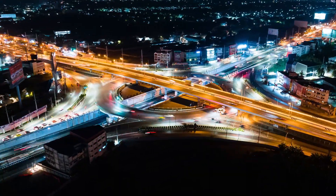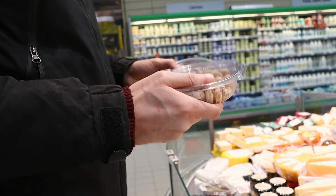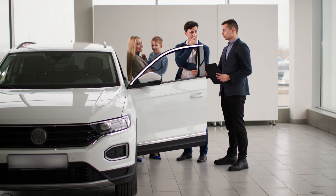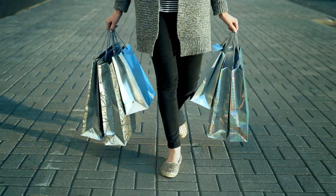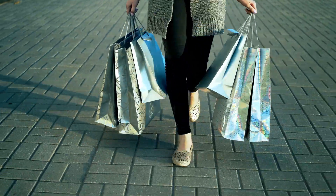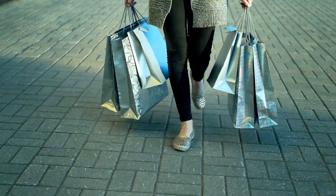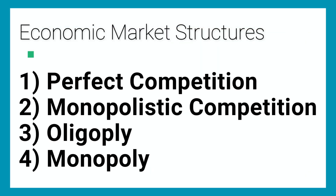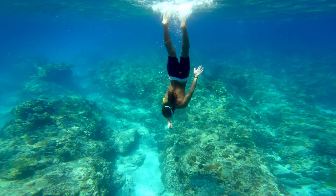Let's talk about the extremes of economic market structures. You're going to want to look at this from a buyer's perspective as well as a seller's perspective, and by the end of this video you'll better understand where some of your favorite products and services fall within these categories. We're going to cover four main categories: one, perfect competition; two, monopolistic competition; three, oligopoly; four, monopoly. Let's dive into this.